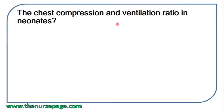Next question: chest compression to ventilation ratio in neonates is 3:1. In adults it is 30:2, whereas in neonates it is 3:1.